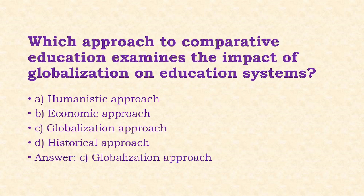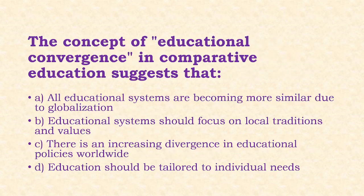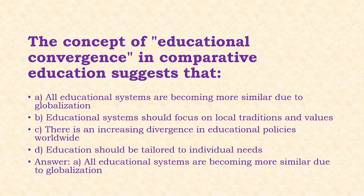Next: The concept of educational convergence in comparative education suggests that all educational systems are becoming more similar due to globalization. Options: all educational systems are becoming more similar due to globalization; educational systems should focus on local traditions and values; there is increasing divergence in educational policies worldwide; education should be tailored to individual needs. The answer is option A.